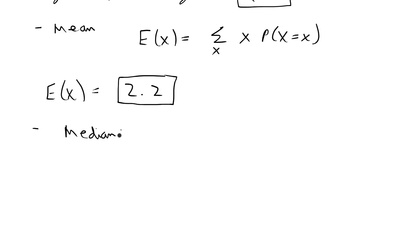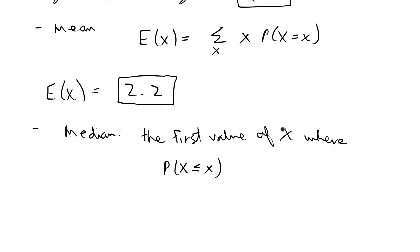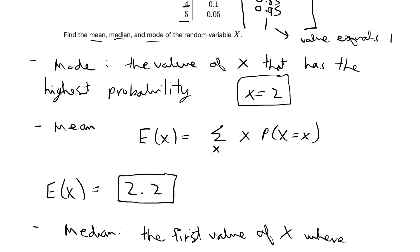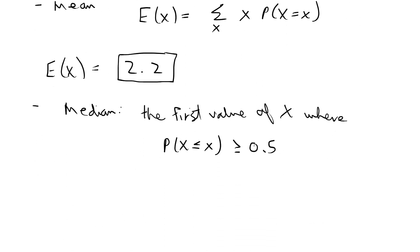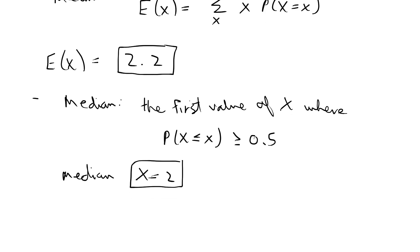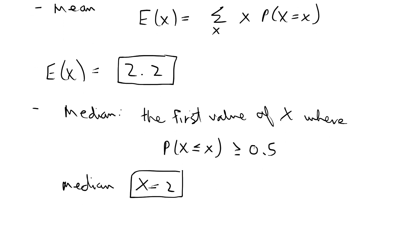For the median, using the CDF, it's defined as the first value of x where the CDF is greater than or equal to 0.5. Looking at our CDF table: x = 0 has CDF 0.1, which is less than 0.5; x = 1 has CDF 0.3, also less than 0.5; so our median is x = 2 because that is the first value where the CDF is greater than or equal to 0.5 — the CDF there is 0.6. So to summarize: the mode equals 2, the median equals 2, and the expected value equals 2.2. And we are done with this problem.